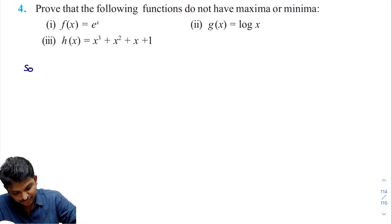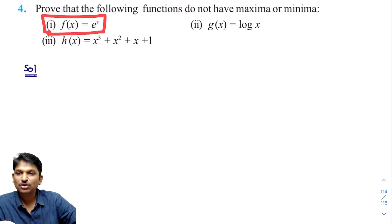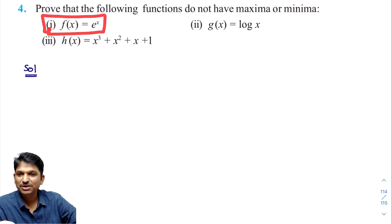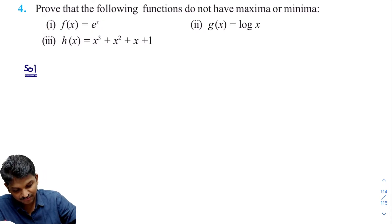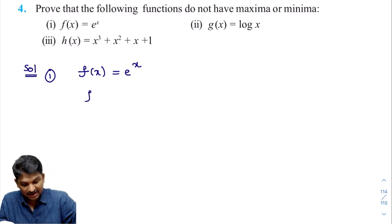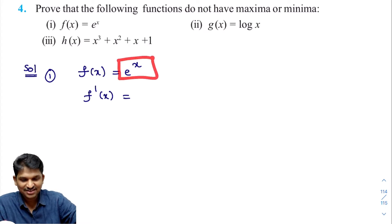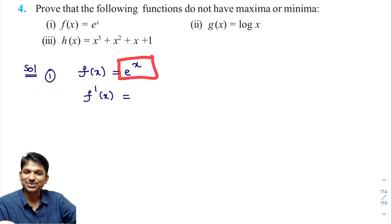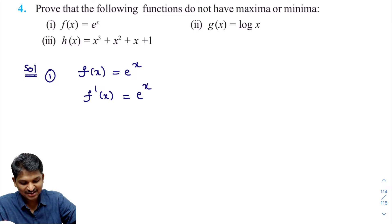Now, let us come to the solution of the first part. The given function is f(x) = eˣ. We need to prove that this function does not have a maximum or minimum value. First, calculate f'(x). The derivative of eˣ is eˣ — that is the easiest formula in differentiation. So f'(x) = eˣ.